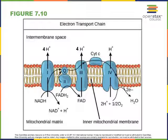As the electrons from cytochrome C move to form water, they are moving from a higher energy state in cytochrome C to a lower energy state in water. Some of the energy released in that process is used to pump 2 hydrogen ions from the mitochondrial matrix out into the intermembrane space.